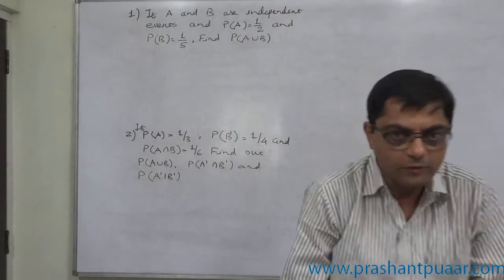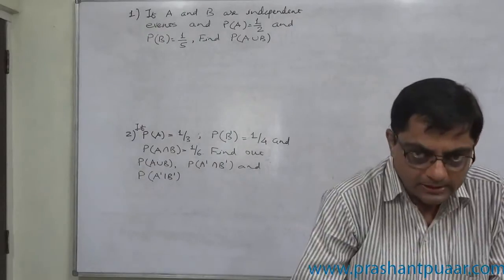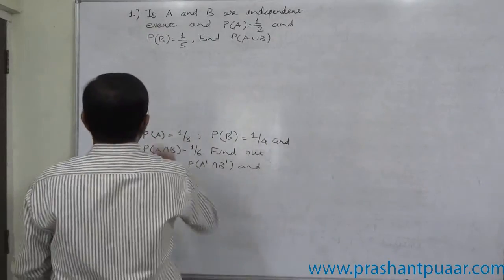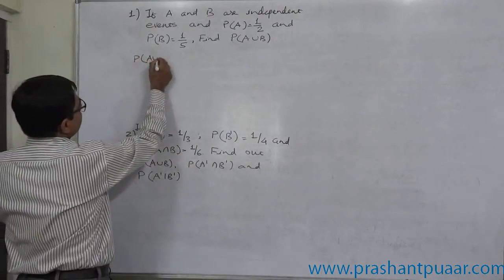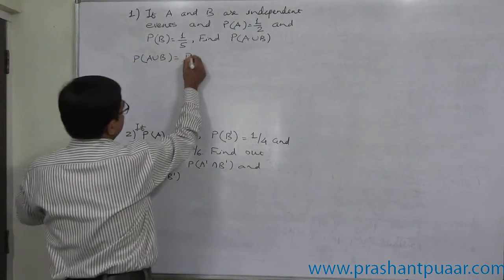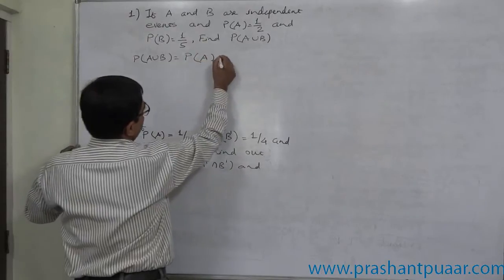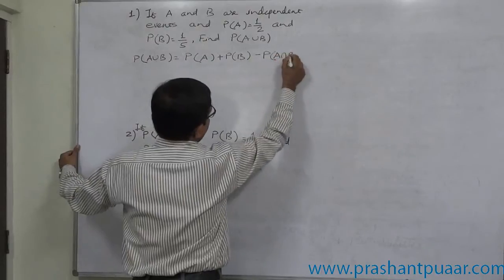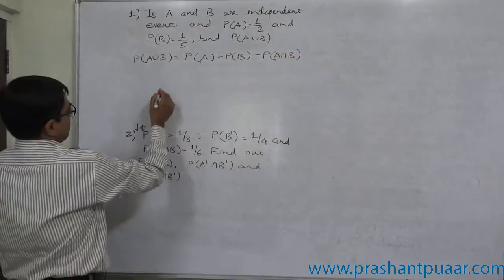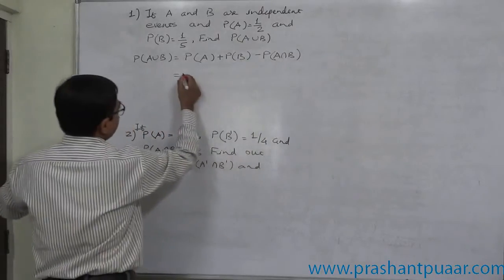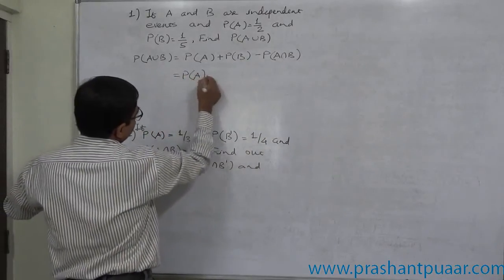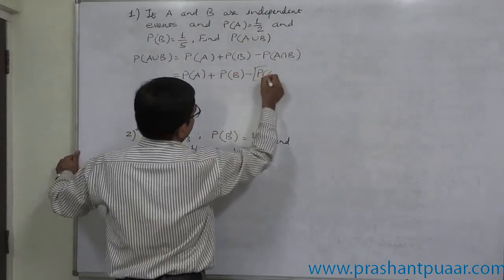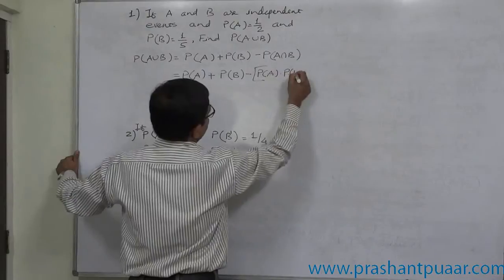This is the general law of addition of probabilities where two events are independent. The formula for P(A∪B) is P(A) plus P(B) minus P(A∩B). But since A and B are independent events, the formula becomes P(A) plus P(B) minus P(A) into P(B).